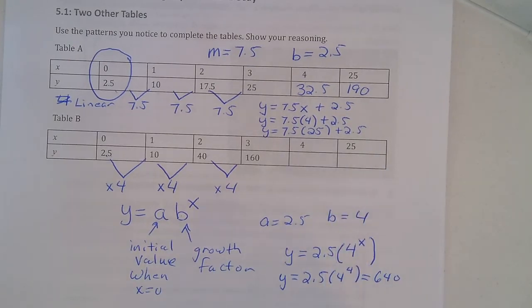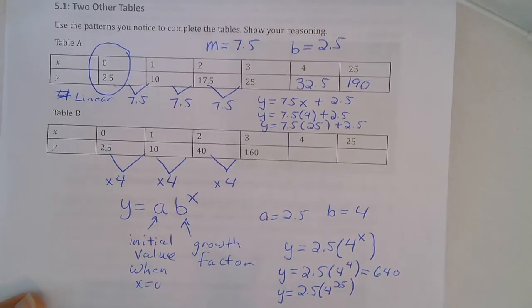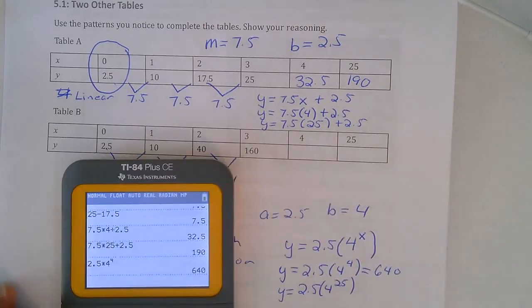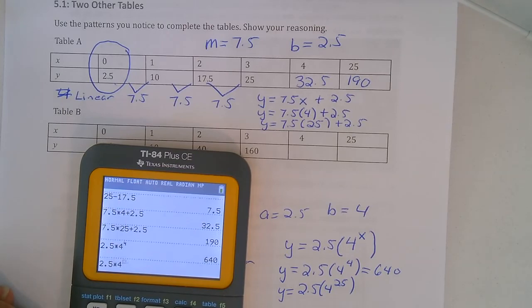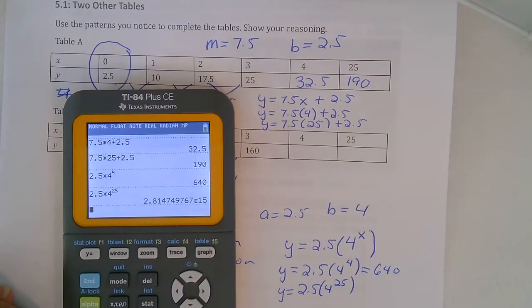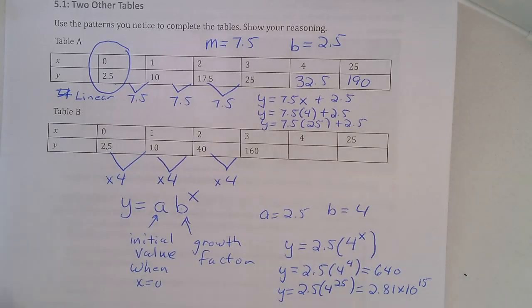And then substituting 25 there, so y equals 2.5 times 4 to the 25. Note that this is going to be really big because 4 to the 25th power is very large. Sometimes that might be more than a calculator can display, but in scientific notation this means 2 point 8 1, and then that e to the 15 means times 10 to the 15th power. The number became so large that you had to use scientific notation to describe it.